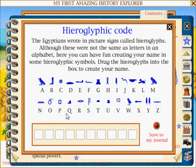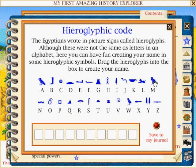Hieroglyphic code: The Egyptians wrote in picture signs called hieroglyphs. Although these were not the same as letters in an alphabet, here you can have fun creating your name in some hieroglyphic symbols. Drag the hieroglyphs into the box to create your name.